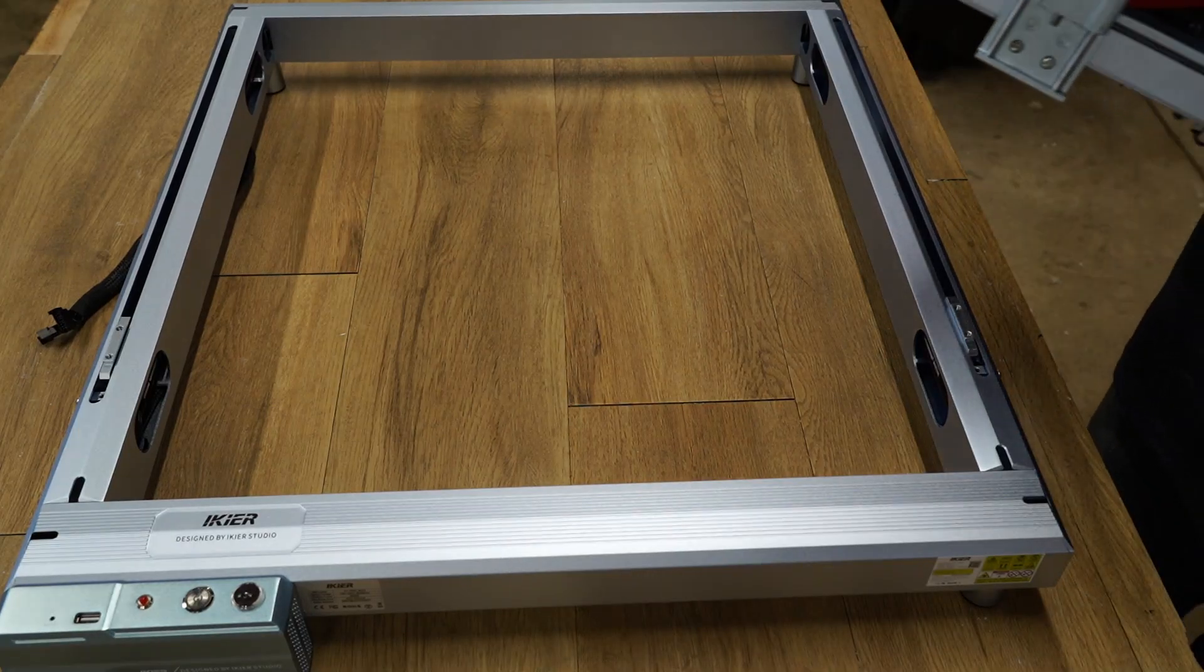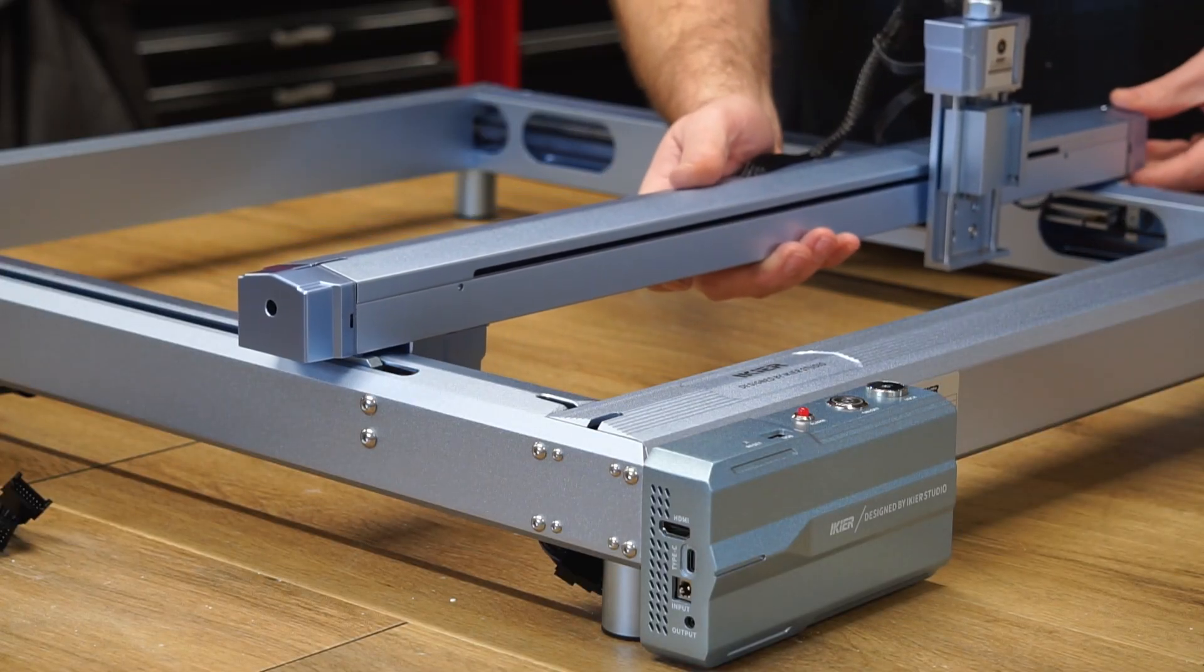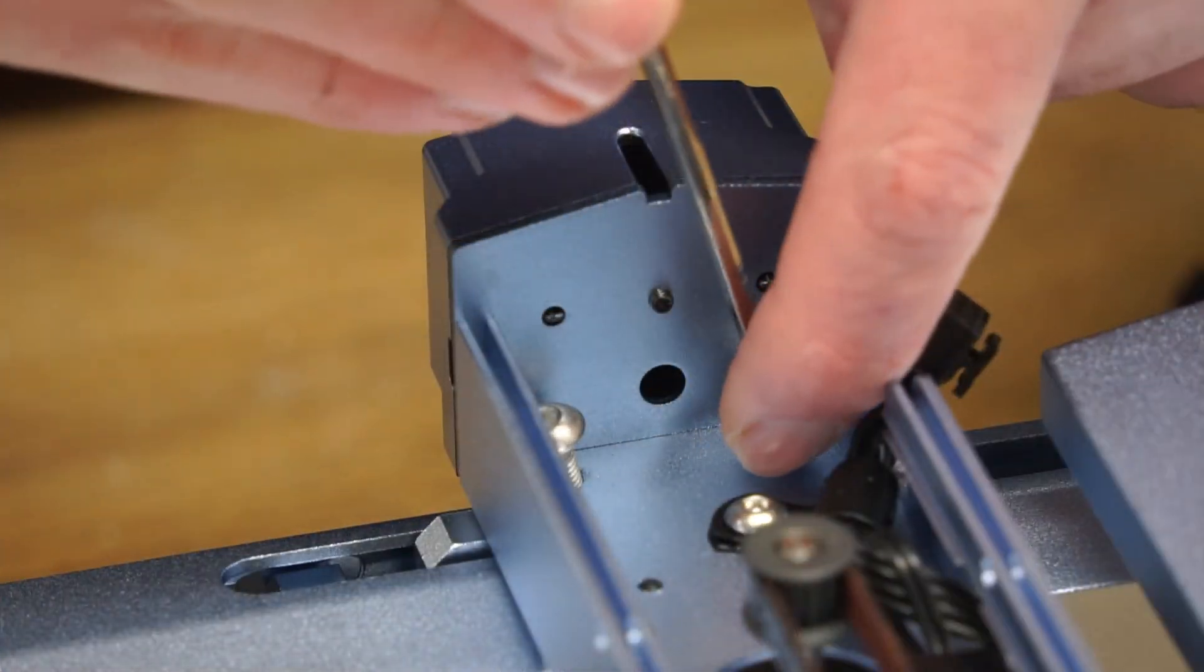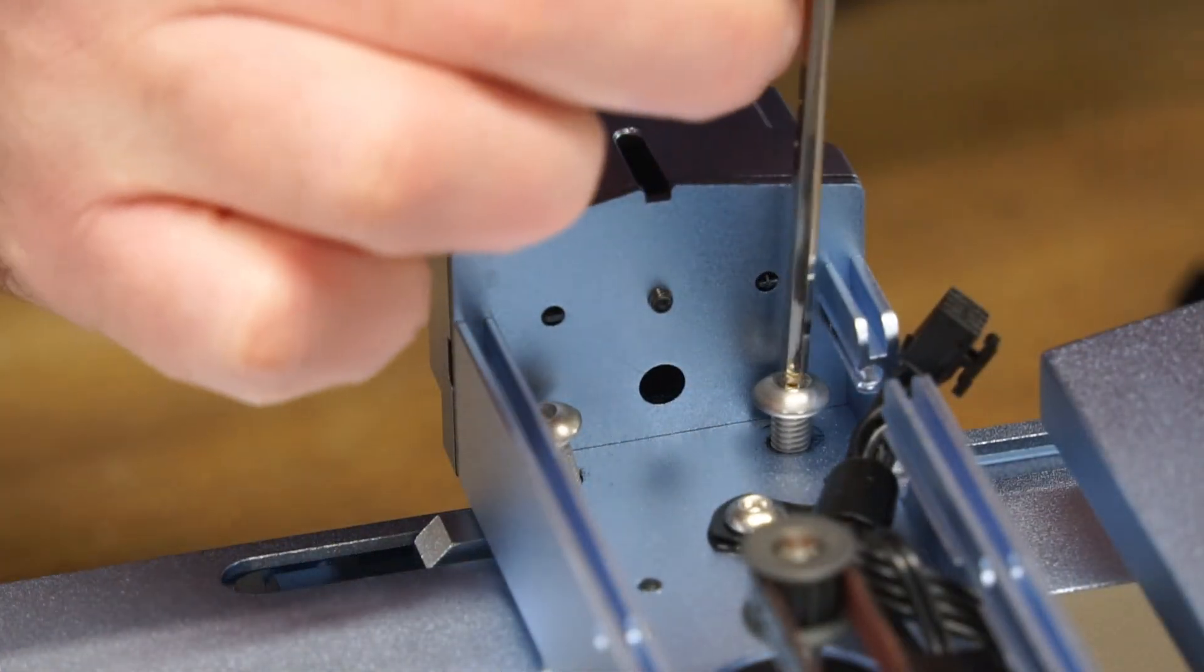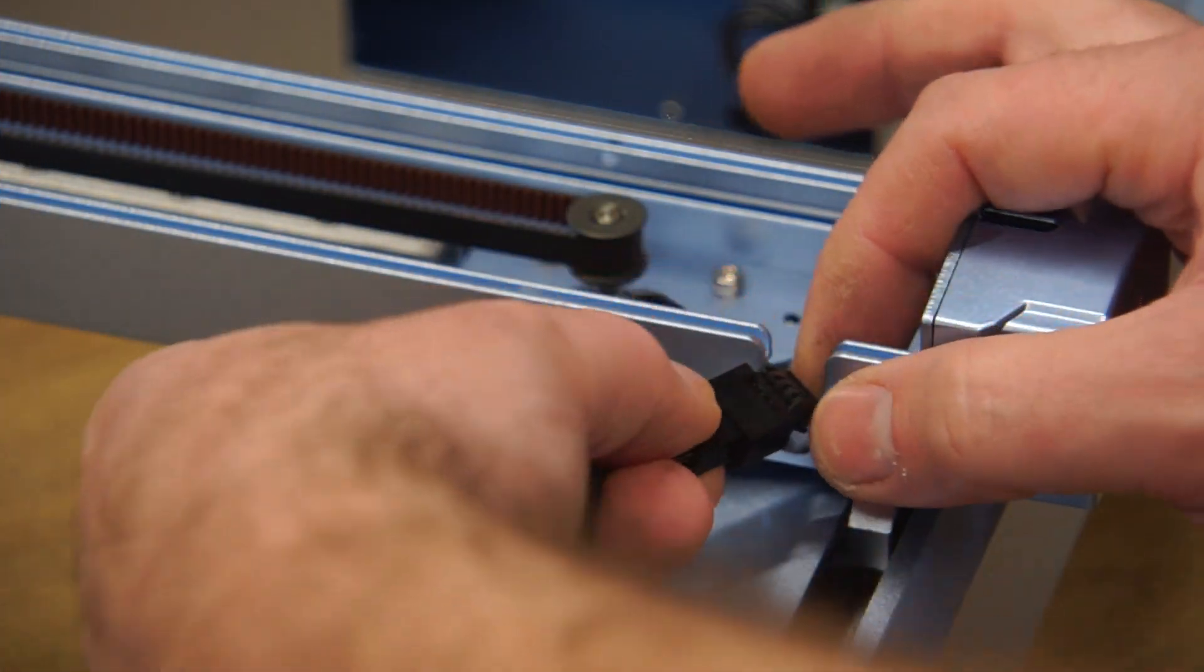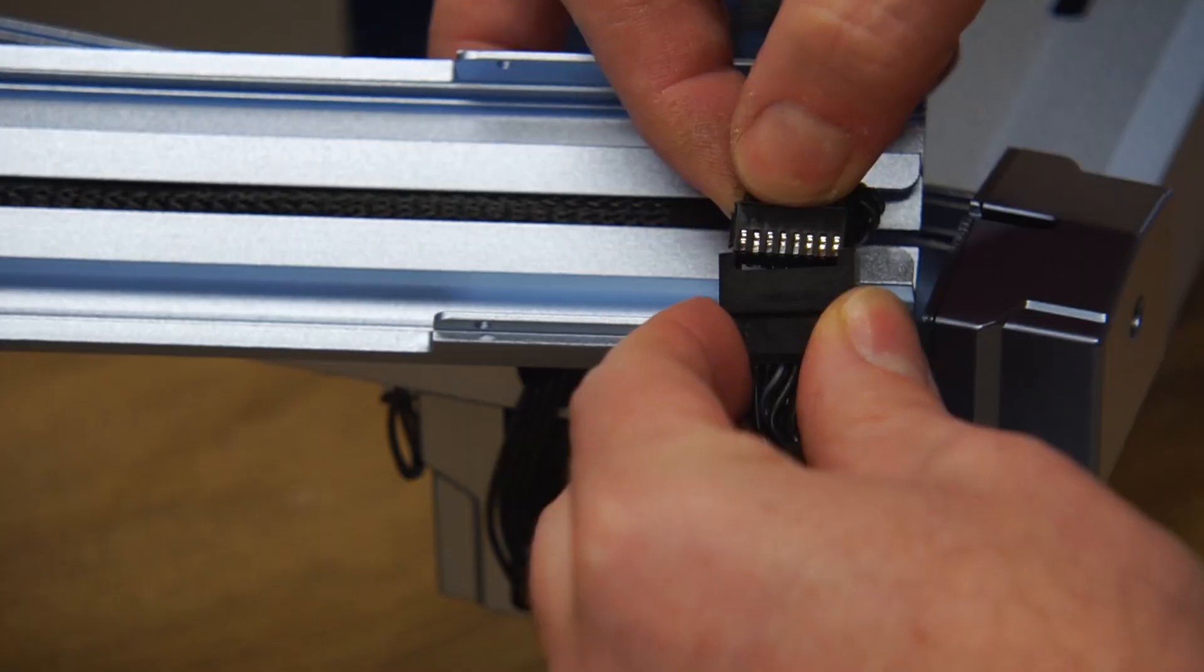To assemble the machine, the X-axis is placed on its mounts and the top cover removed, which gives us access to install four screws. Plug the two looms together and then reinstall the top cover.